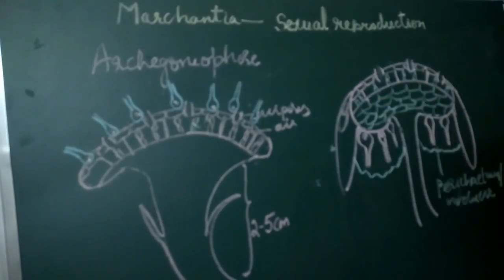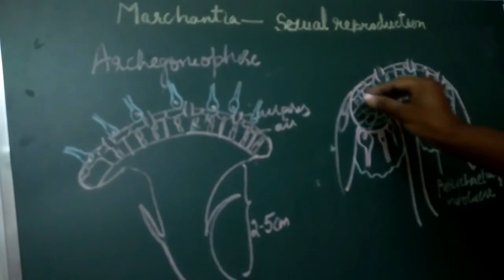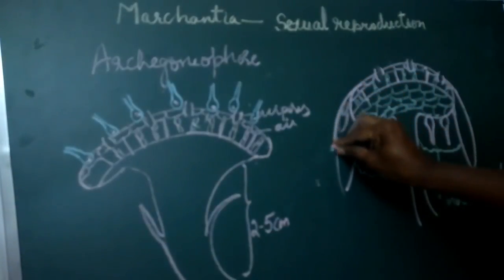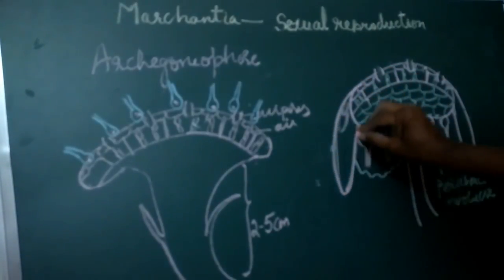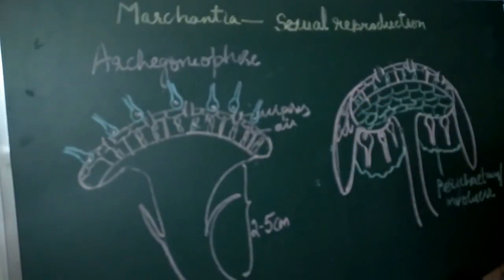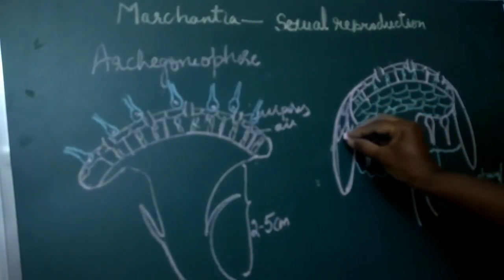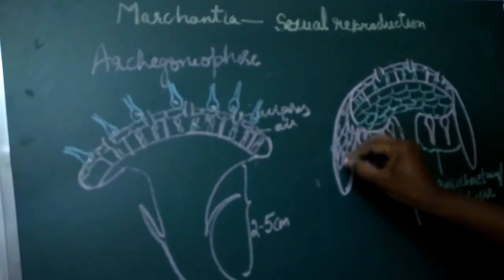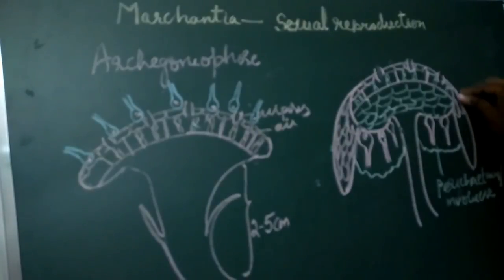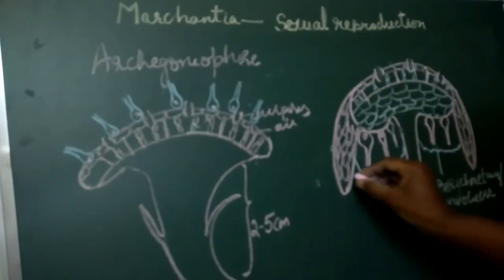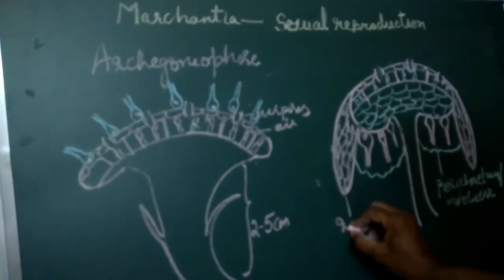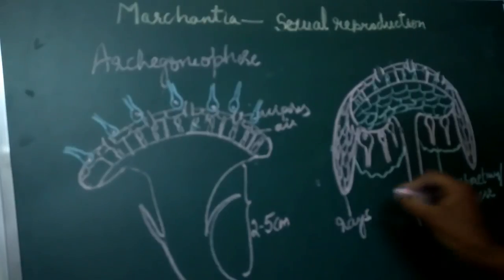Projections develop from the margin of the peltate disc between the groups of archegonia. These appendages are called paraphyses.